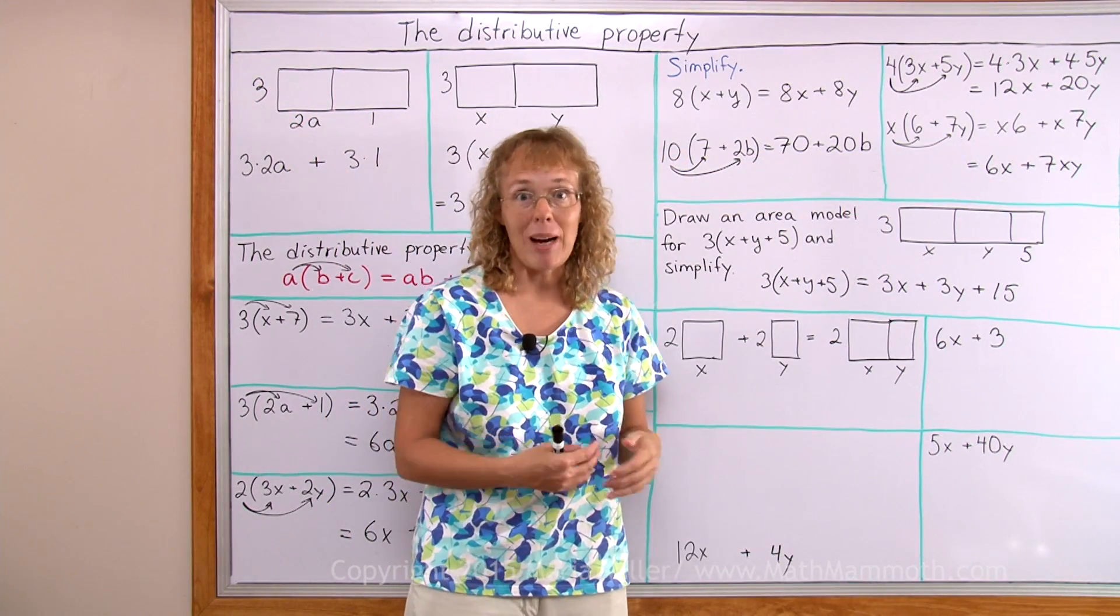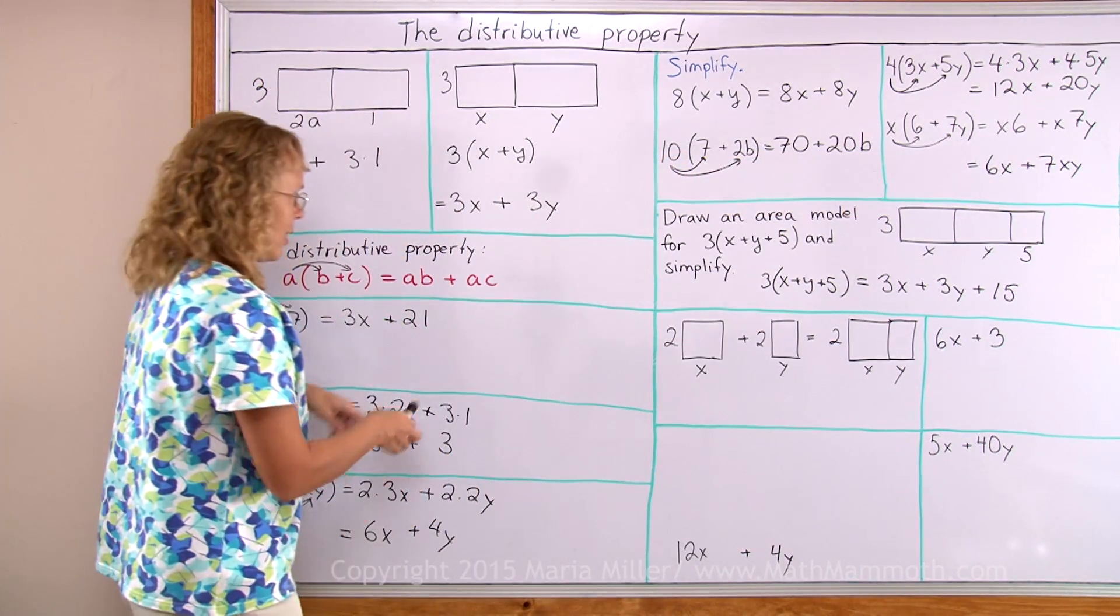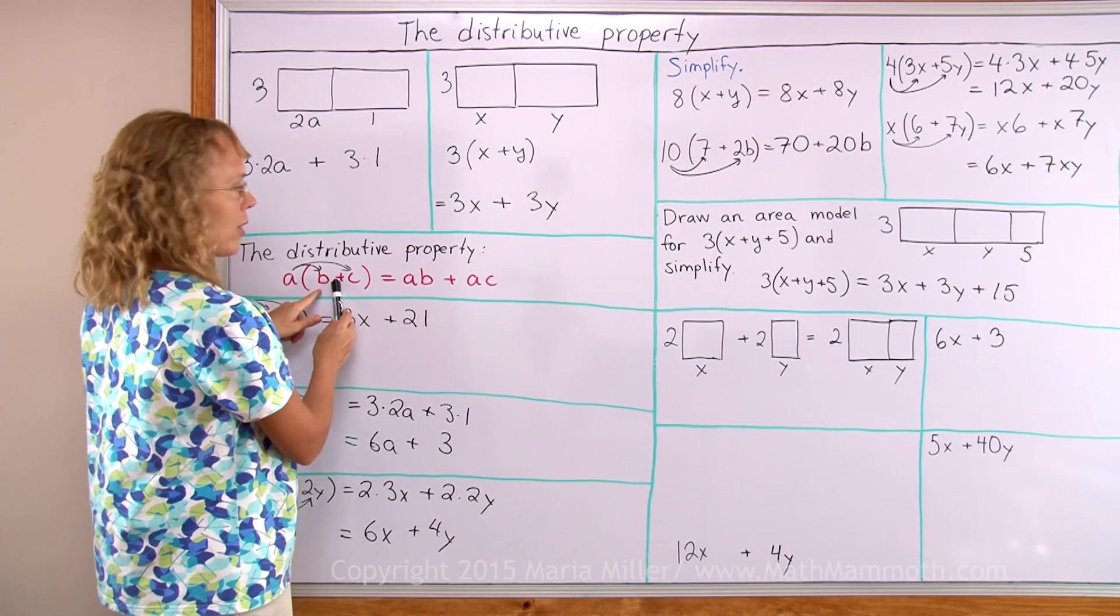Now we're going to look at distributive property backwards. It means that we start with something like this and go this way.